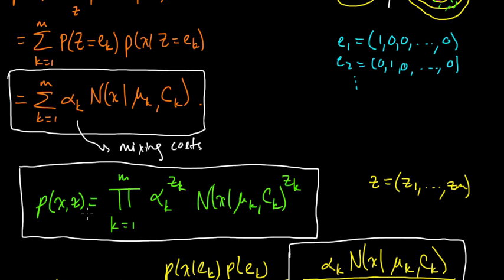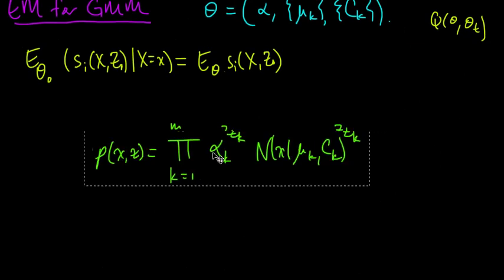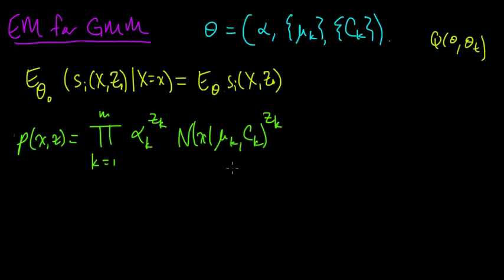First, let's consider the case when we just have a single data point x and a single hidden variable z for that x. Let's show that this is an exponential family. The z and the x are the variables here, and the parameters are the alpha, mu, and c.